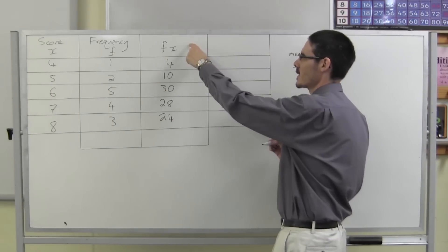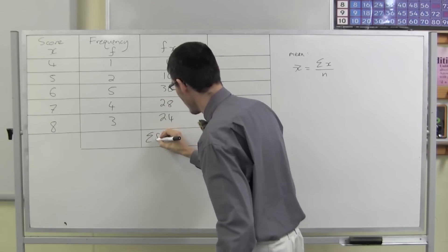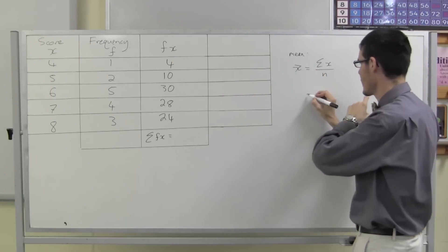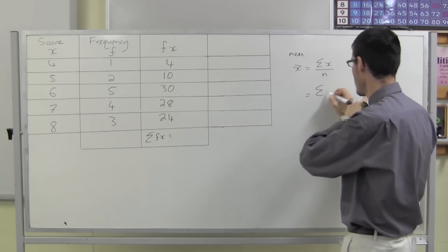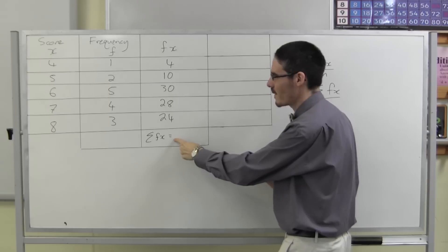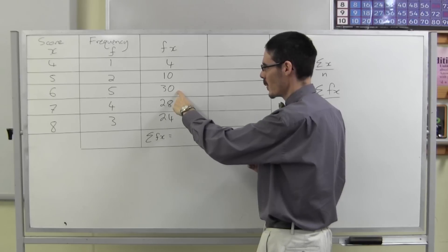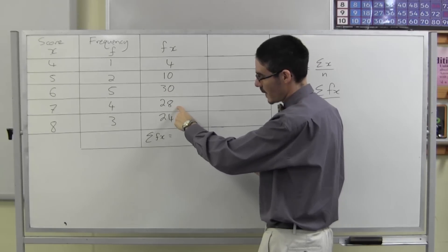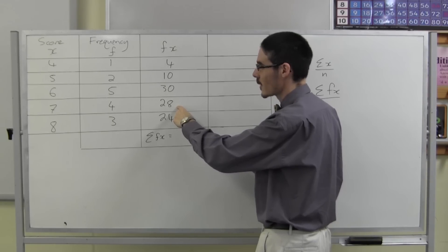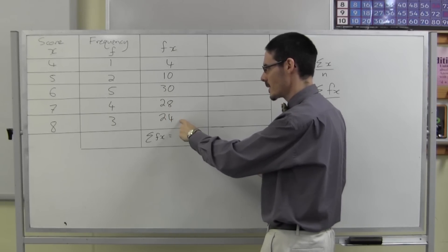So in fact the total of the scores, which we write as sigma fx rather than just sigma x, is 4 plus 10 is 14, plus 30 is 44, plus 28 is 72, plus 24 is 96.